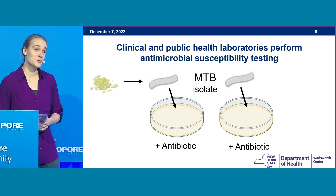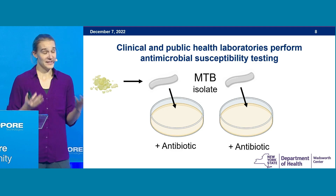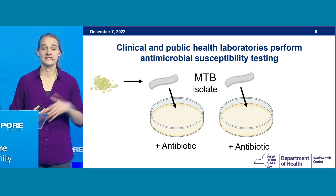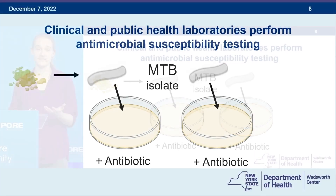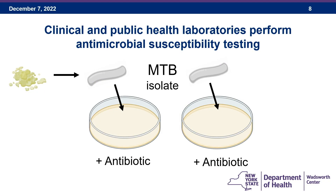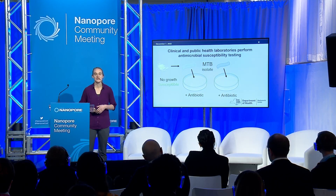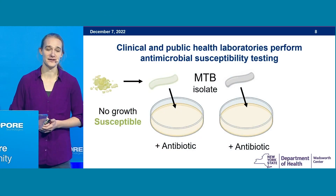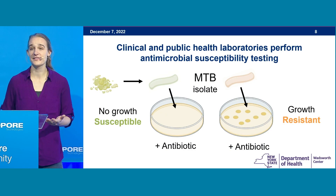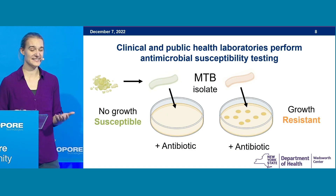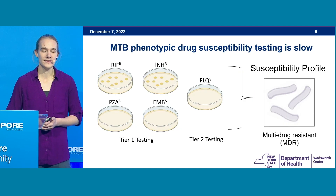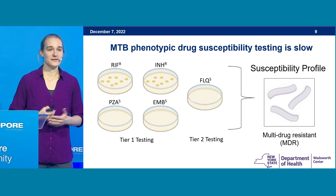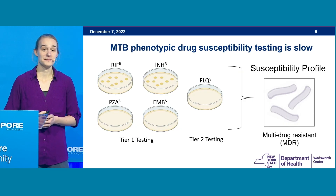To determine antimicrobial susceptibilities in a laboratory setting, the traditional way is to isolate the bacterium and test its response to antibiotics. We isolate the bacterium from a respiratory sample and plate it on a growth medium containing the antibiotic. Following incubation, if the bacteria shows no growth, it's considered susceptible. If we observe growth, it's considered resistant and isn't a good option for therapy.